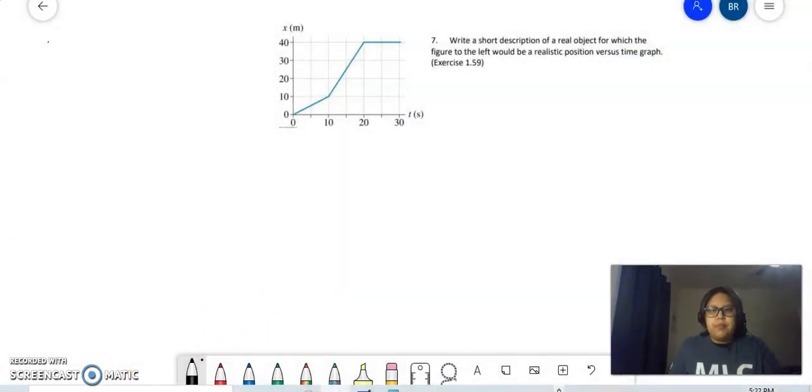So let's read the problem. Write a short description of a real object for which the figure to the left will be a realistic position versus time graph. So these position versus time graphs are telling you where the object is compared to the origin and how it's moving in time.